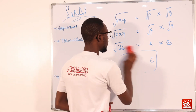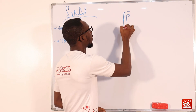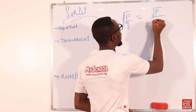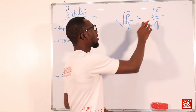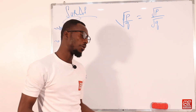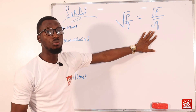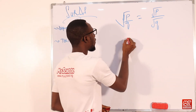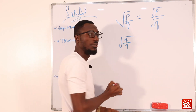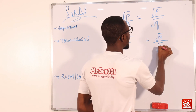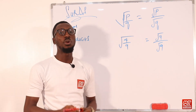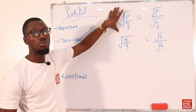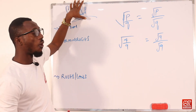The second law: root of (p over q) equals root p over root q. In mathematics, the fractional bar can be referred to as the vinculum. For example, if p is 4 and q is 9, then root of (4/9) equals root 4 over root 9. When you work this out you will still arrive at the same answer, confirming the second law regarding the rules of surds.